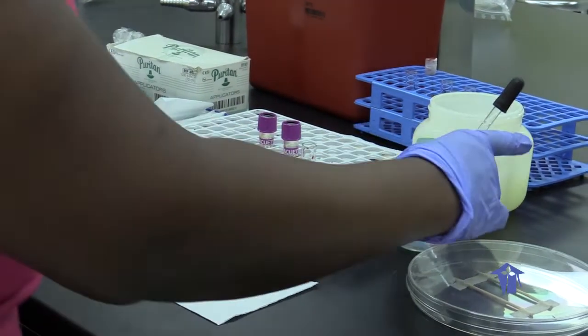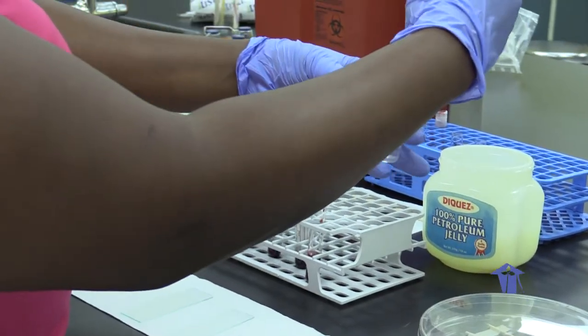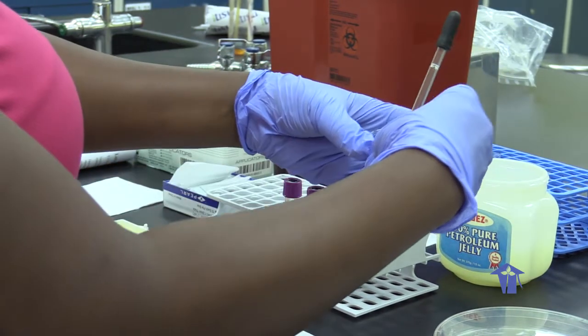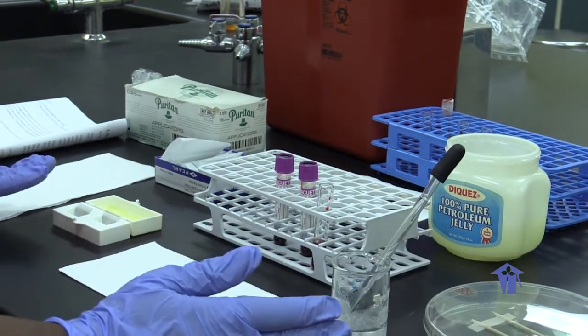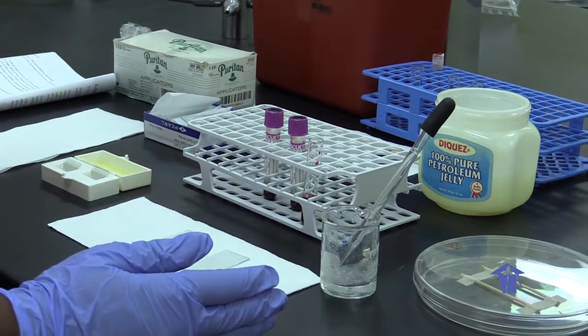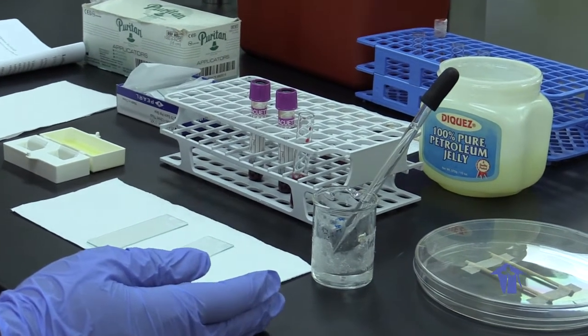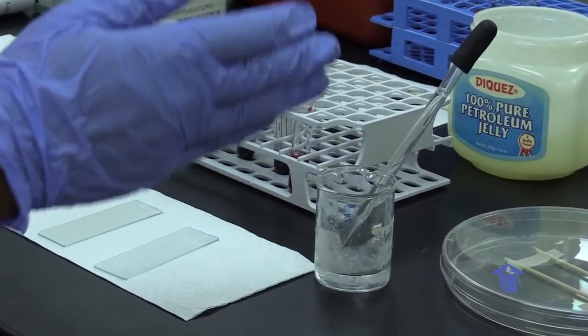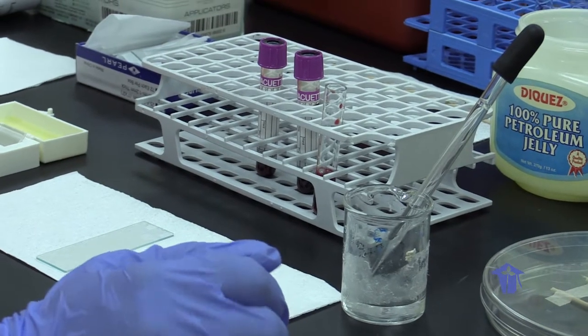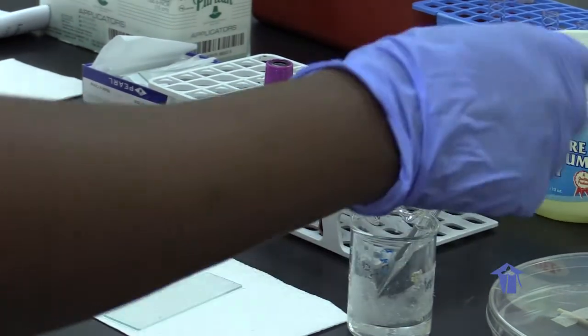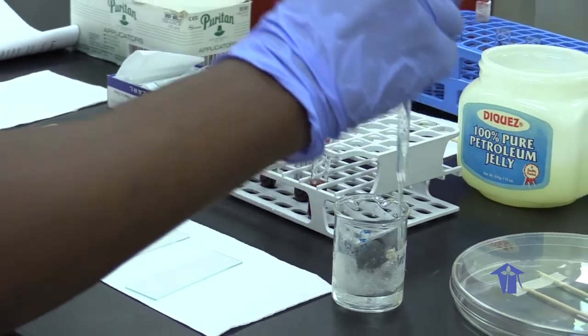We have already made up the sodium metabisulfite, 2%, by adding 0.2 grams of the sodium metabisulfite solvent powder, and we used 10 ml of distilled water. So this is our sodium metabisulfite solution.